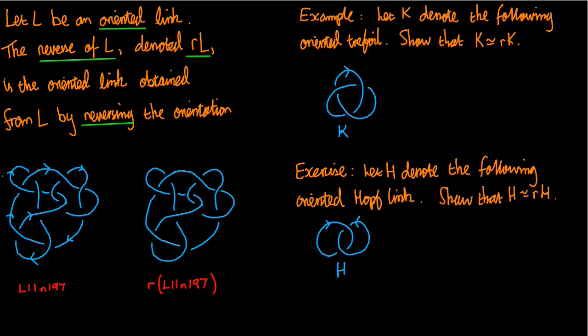So if I started with the oriented link on the bottom left here, this is a link called L11N197. N because it's not alternating, the crosses don't go over under. See, these two crossings are adjacent and they're both over. Anyway, this is the link L11N197 and I've given it an orientation of my choice. So what's the reverse? Well, all I do is wherever I see an arrow on the left-hand diagram, I put the reverse arrow on the right, like so.